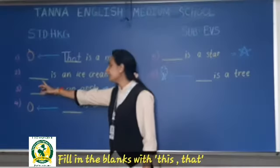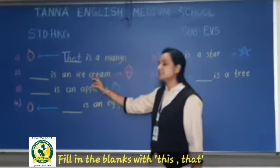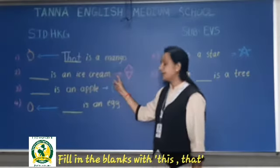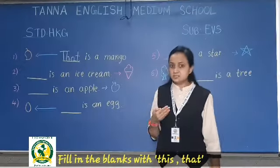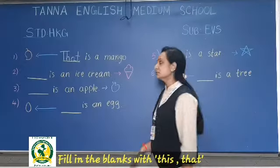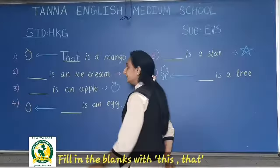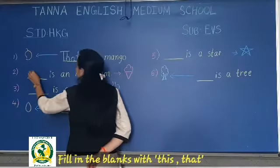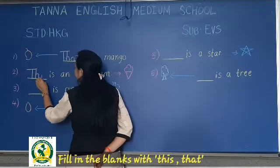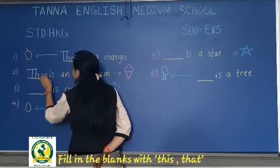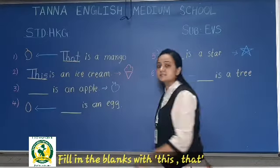Now the second one — that is an ice cream. So ice cream hai, wo nasdik hai, it is near to us. So we write 'this.' T-H-I-S. This is an ice cream.